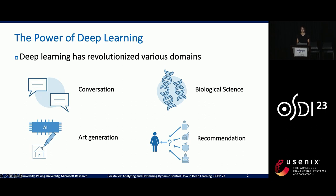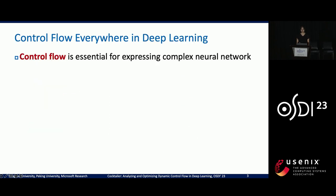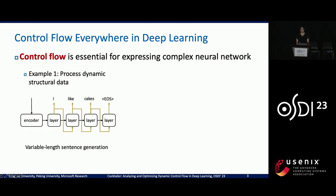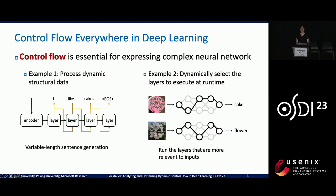In recent years, deep learning has shown its power in various domains like conversation, biological science, art generation, and recommendation. Control flow is everywhere in deep learning and is essential to express complex neural networks. One crucial application of control flow is using it to generate or analyze data with dynamic structures, such as sentences with variable lengths. Control flow is also used to dynamically select the layers at runtime, so the model can select the layers that are more relevant to the input and becomes more efficient.